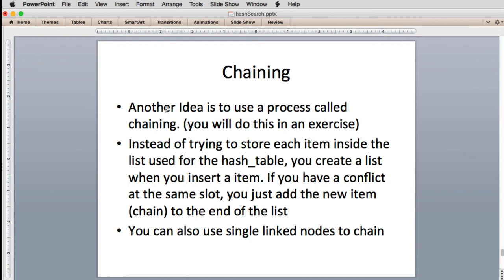So what chaining is, is you don't store the actual hash values in the hash table anymore. The hash table starts out the same, it's all a value of none. But when you go to insert a new item, if there's nothing in the slot yet, you create a list and you point to that list, and you add the hash item to that list. Then in the future, if you have a conflict in the same slot, you just add the new item to the end of that list, and that's called the chain.